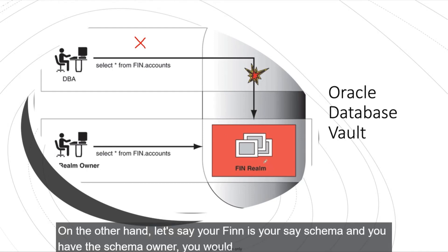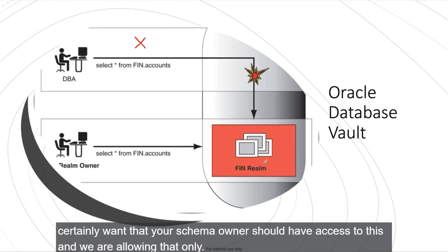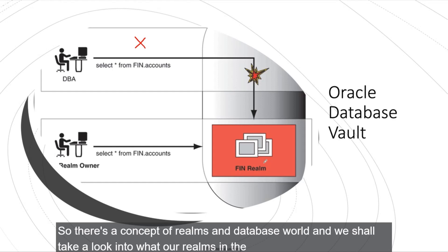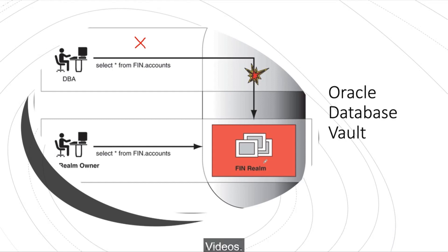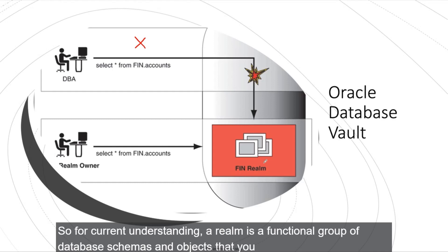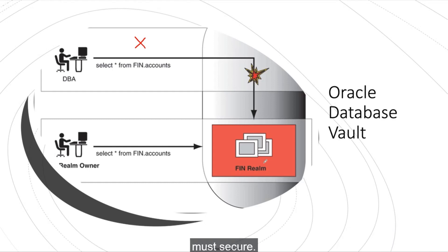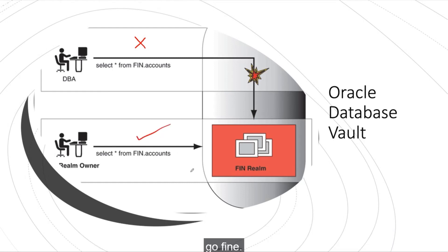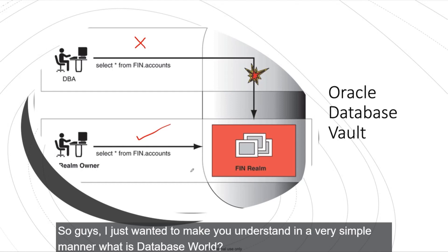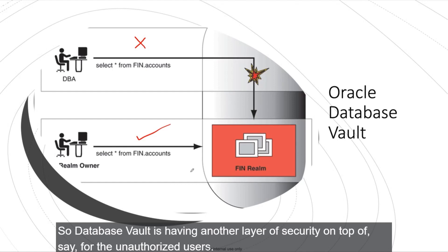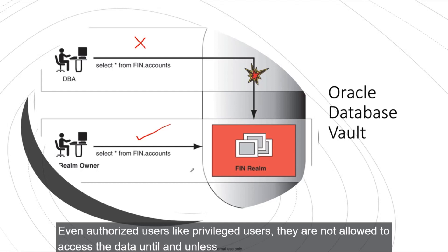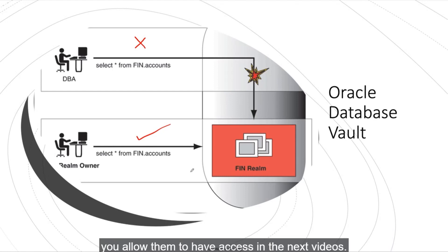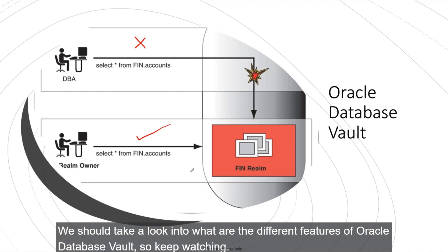On the other hand, the schema owner — say the FIN user — should certainly have access, and we allow that. There's a concept of realms in Database Vault. A realm is a functional group of database schemas and objects that you must secure. The realm owner trying SELECT star from FIN.accounts should go fine. Database Vault adds another layer of security so that even privileged users cannot access data unless explicitly authorized.